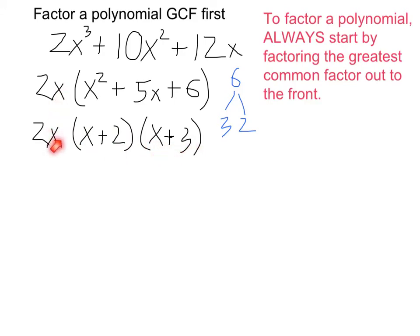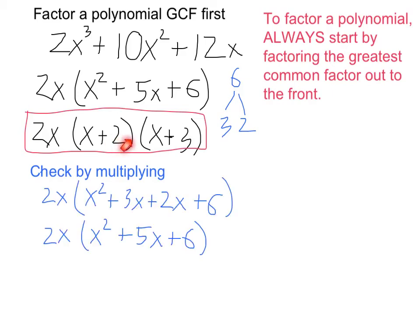We do need to preserve the 2x, and this is the original in factored form. So, I'm done factoring, but I can do a quick check by multiplying. When I FOIL these, I get x squared plus 3x plus 2x plus 6, which goes back to this.